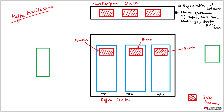To clarify: zookeeper stores topic-related details, partition-related details — like which partition is stored where and the number of partitions in a topic. It stores leader information — which partition is the leader. Quota is how much a client is allowed to write; you can throttle the client by setting that quota. Access control lists (ACLs) define who is allowed to write on the cluster.